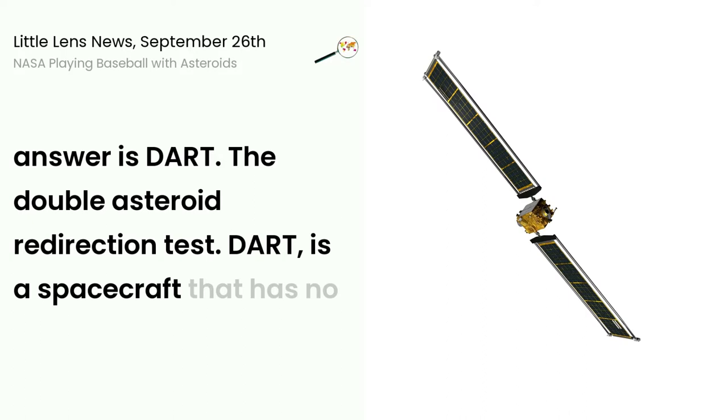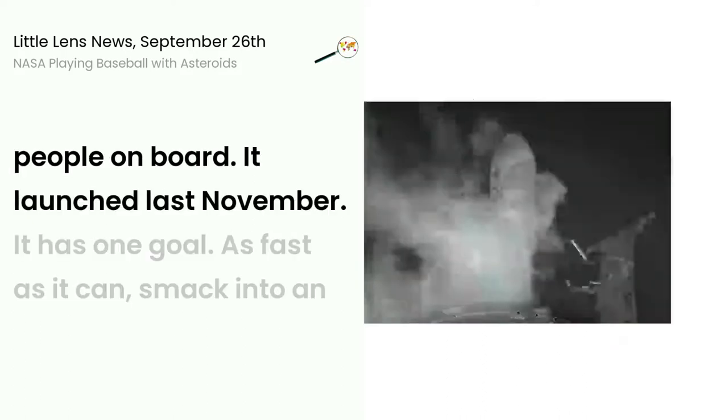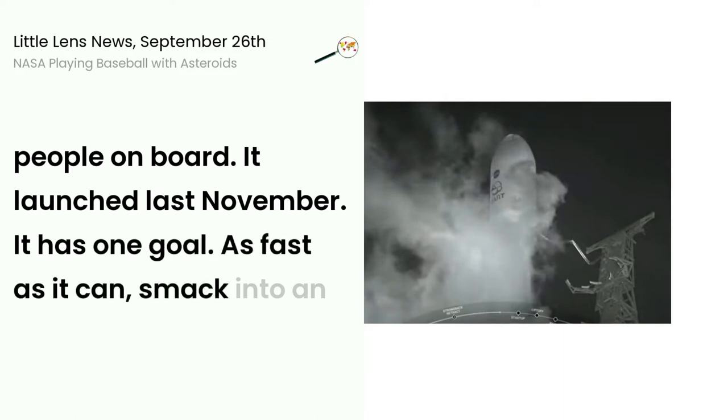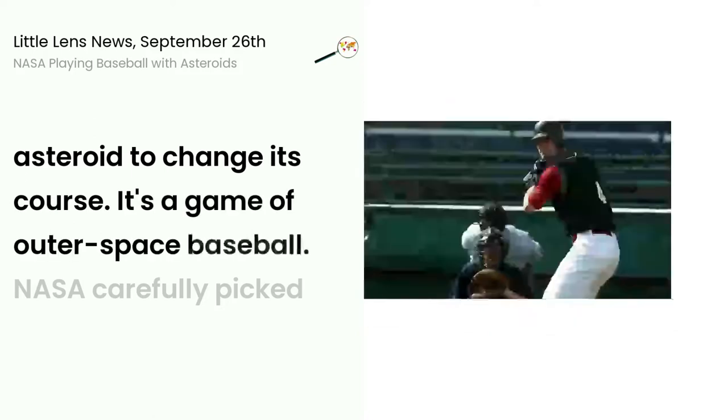DART is a spacecraft that has no people on board. It launched last November. It has one goal: as fast as it can, smack into an asteroid to change its course. It's a game of outer space baseball.